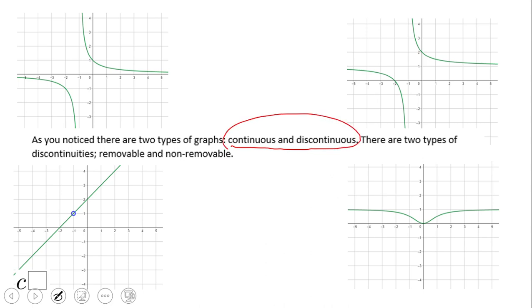There are rational functions that are continuous, like this one. There are rational functions that are discontinuous—this one, this one, and this one. So all these three are discontinuous. The red one is continuous.